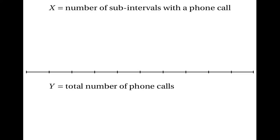In most cases though, x and y will be the same. To see why, consider this example. Suppose I get phone calls at these times. You can see that both x and y here will be equal to 3. x will be equal to 3 because there are 3 sub-intervals in which I receive a phone call, and y will be 3 because the total number of phone calls I receive is 3. So x has the binomial distribution and y has the Poisson distribution, but the vast majority of the time x and y will be the same.